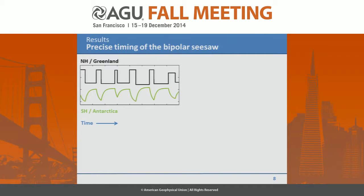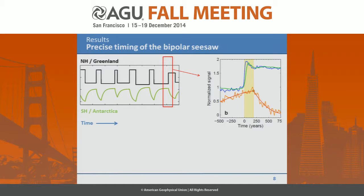Here is what we find. Looking at one of those abrupt warmings in Greenland — to reduce noise in the δ18O time series, I stacked all 18 DO events in the record, synchronized them, and aligned them at the midpoint of their methane transition, then averaged all events to reveal the shared climatic signal. The blue line is North GRIP temperature, the green line is methane measured at WAIS Divide, and the red is the WAIS Divide isotope temperature. What we find is a very pronounced roughly 200-year lag — the Northern Hemisphere starts to warm, and it takes about 200 years before Antarctica realizes what has happened.